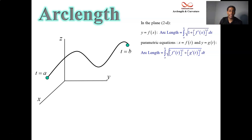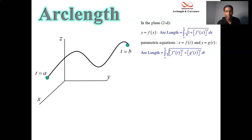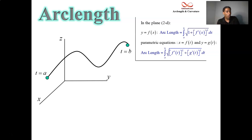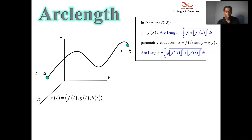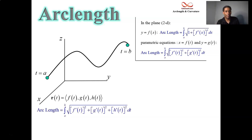Functions might also have been explained in a parametric way, where instead of having y as a function of x, we have x and y both being functions of a parameter t. To find arc length parametrically, we take the derivative and square for each function, add them up, and take a square root. For 3D, it mimics that — we have one more component, the k component, call it h of t. So the formula integrates the square root of the sum of squared derivatives of f, g, and h from a to b.